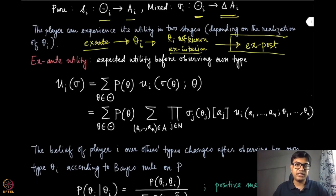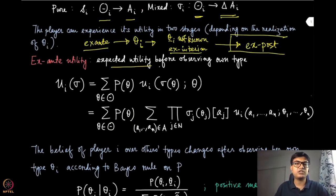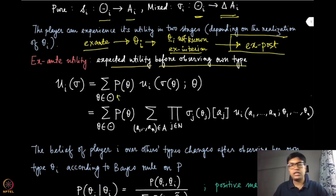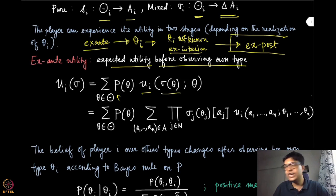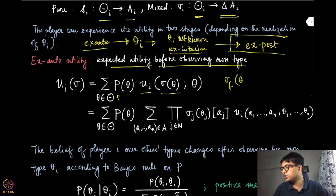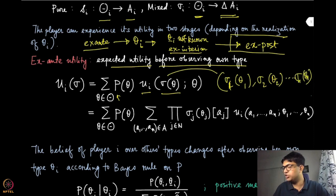The ex ante utility is the expected utility for a specific player even before observing its own type. Since it does not know what theta_i is, it must take an expectation with respect to the common prior. It knows the probability distribution — the common prior is common knowledge. So sigma of theta is a shorthand notation for the vector (sigma_1 of theta_1, sigma_2 of theta_2, ...) at a specific type profile theta.